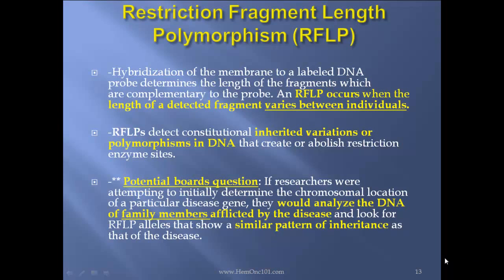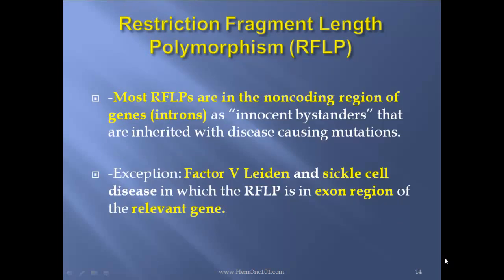A potential board question: if researchers were attempting to determine the chromosomal location of a particular disease gene, they would analyze the DNA of family members afflicted by the disease and look for the RFLP allele that shows a similar pattern of inheritance as that of the disease. Most RFLPs are in the non-coding region of genes — the introns — as innocent bystanders inherited with disease-causing mutations. The exception is factor V Leiden and sickle cell disease, in which the RFLPs are actually in the exon region of the relevant gene.